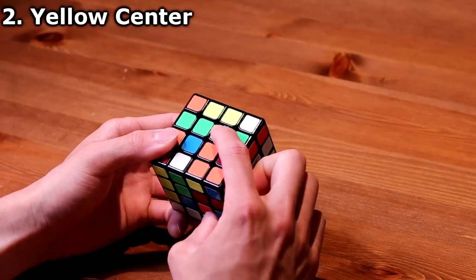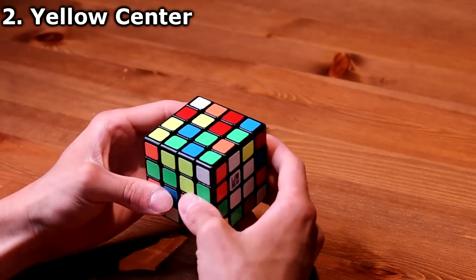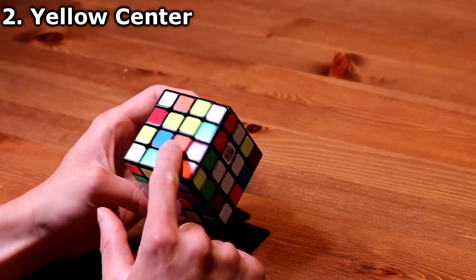Now on to the yellow center. I see one piece there, one piece there, I can simply match it, turning the side won't mess up the white piece.